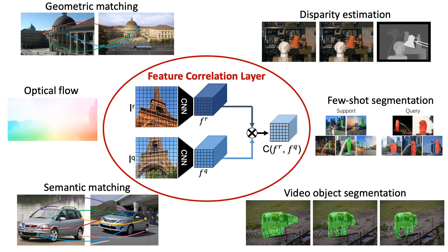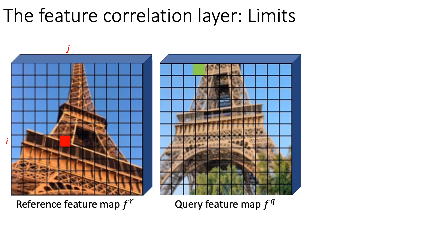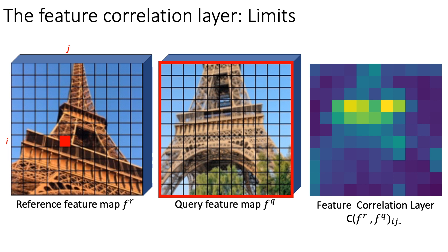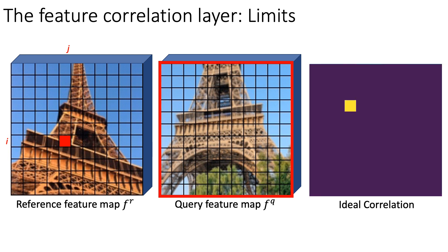The feature correlation layer computes dense correspondence scores between an image pair in the form of a correspondence volume. However, it produces an inaccurate matching confidence map with multiple high matching confidence values. Indeed, the ideal correlation should have a single high confidence value at the location of the matching pixel and zero otherwise.